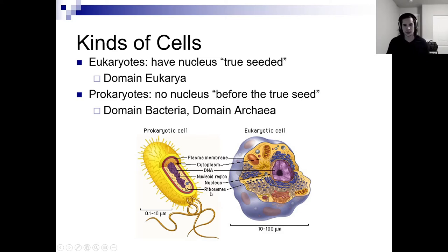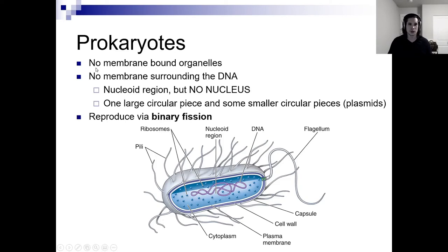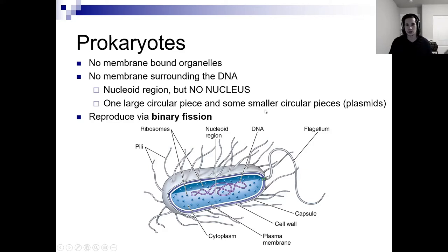Ribosomes are things that help you synthesize proteins from mRNA — kind of like the construction workers within the cells. Prokaryotes have no organelles and no membranes surrounding the DNA, so no nucleus. They have a nucleoid region — that's what we call the genetic stuff area within a prokaryote. They'll typically have one large circular piece and some smaller circular pieces of DNA, whereas eukaryotes have linear DNA.